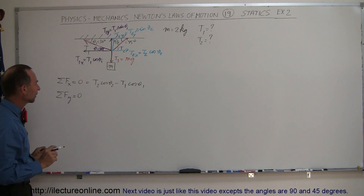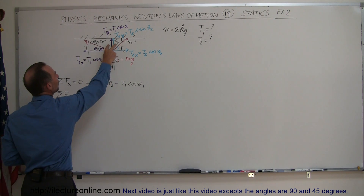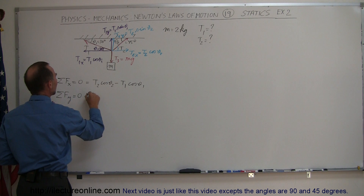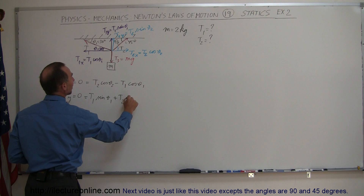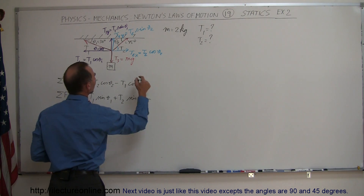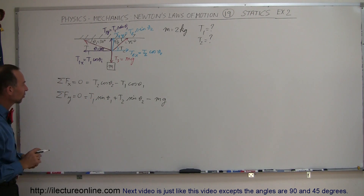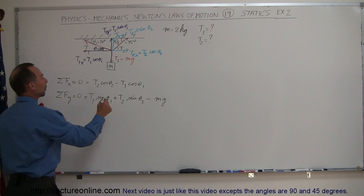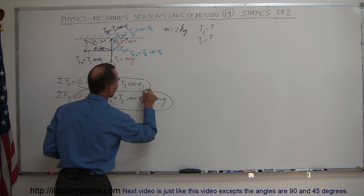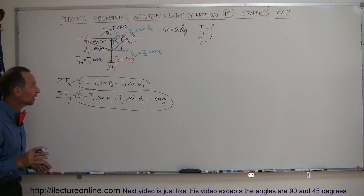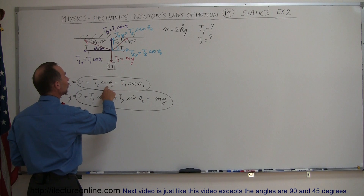That's our first equation with both T1 and T2, but one equation is not enough to solve two unknowns, so we need a second equation from the y direction. We have two positive components: T1 times the sine of theta 1 plus T2 times the sine of theta 2 minus mg equals zero — mg being the weight of the mass hanging from the string. Now we have two equations and two unknowns. Note that T1 and T2 will not be equal because theta 1 and theta 2 are not the same.